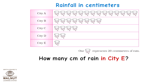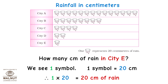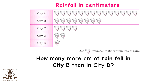How many centimetres of rain in city E? We see one symbol; one symbol is equal to 20 centimetres, therefore 1 into 20 which is equal to 20 centimetres of rain in city E.